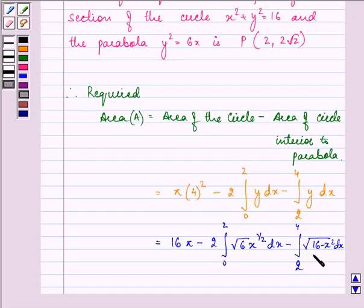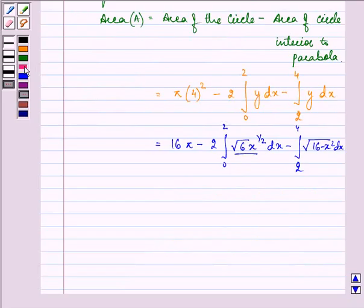Here we substituted the value of y of the circle, and here we substituted the value of y of the parabola. So we have 16π minus 2√6, and after solving this integral we have (2/3)x^(3/2) from 0 to 2 minus 2.